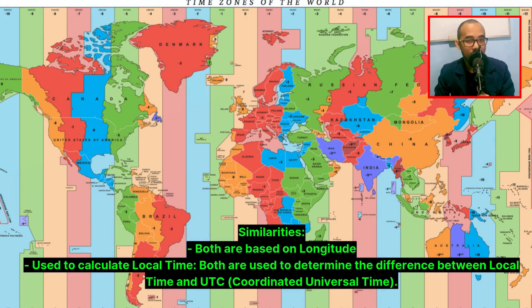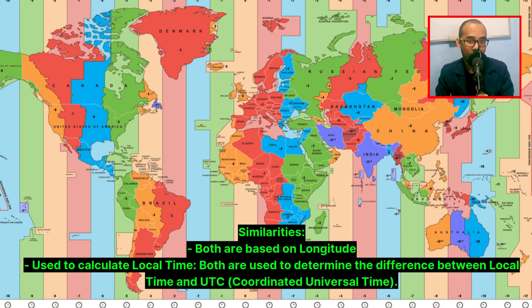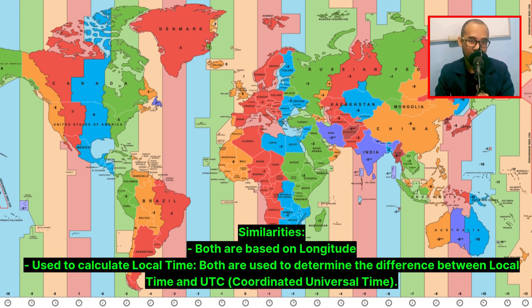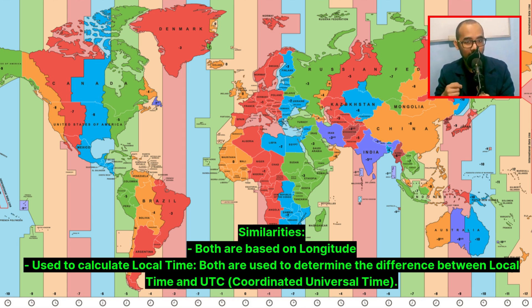For similarities, both are based on longitude and used to calculate local time. Both are also used to determine the difference between local time and UTC, or Coordinated Universal Time.